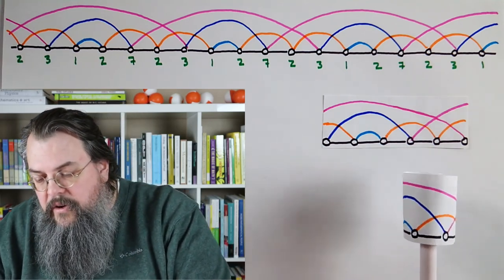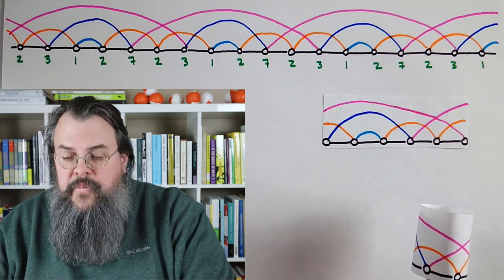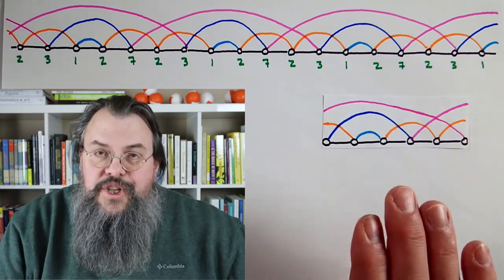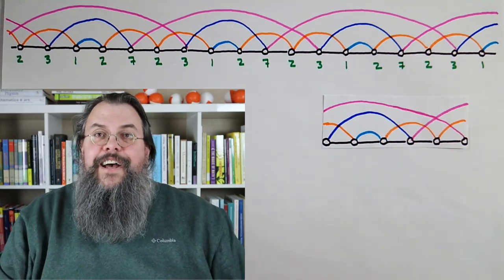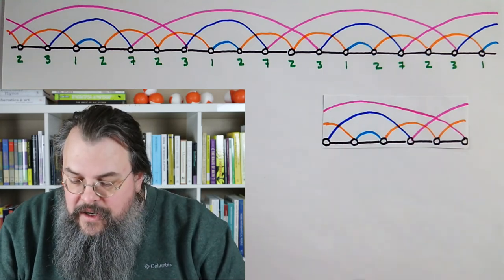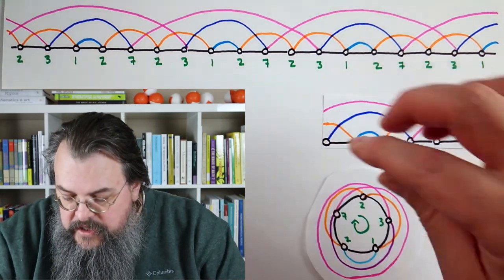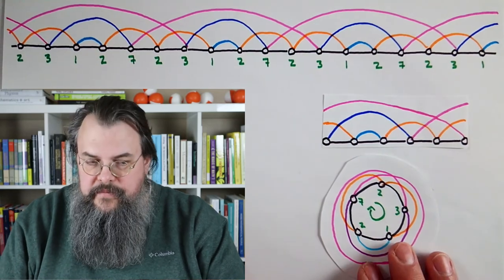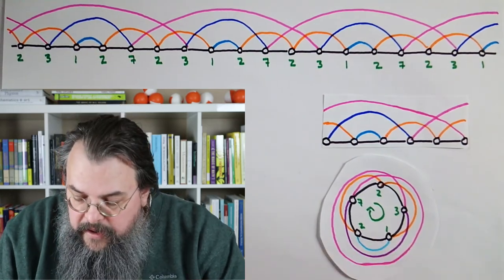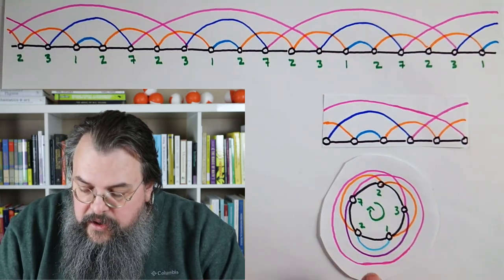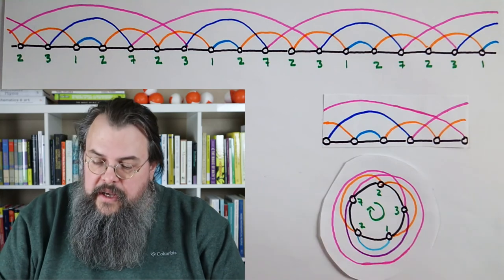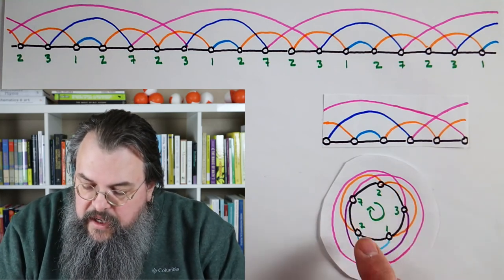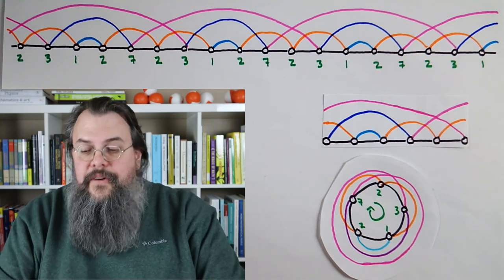We can imagine taking this and squishing it down flat. So there's a circle here, and notice it has these 5 beats. It goes around and around.